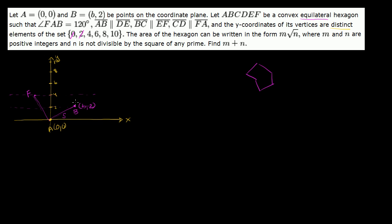Now what about vertex C? Vertex C can't be on the y = 4 horizontal, so it's going to have to be on the y = 6 horizontal — vertex C is someplace like that. That's vertex C, and that length is s. Now what about vertex E? It can't be on y = 6, already taken by vertex C. So the y = 4 and y = 6 are taken, so E has to be at the y = 8 horizontal. And we know that we're going back — not to the origin, but back to the same x-value.